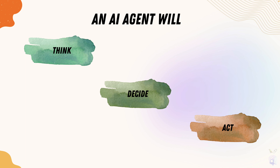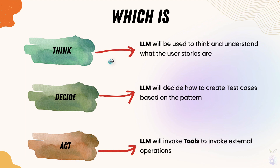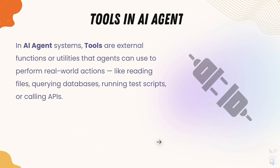In the context of the AI agent, what exactly is the agent going to do for the act operation? For thinking, the large language model comes in because it understands the user input and decides how to create the action plan for any given request. So the think and decide operations are done by the large language model. But the act operation is something the LLM cannot do directly — it can invoke a tool which is bound to it, and that act operation is performed by the AI agent.